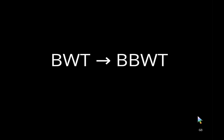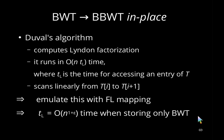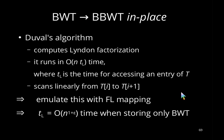For the second part—computing the BBWT from the BWT—we use Duval's algorithm, which computes the Lyndon factorization in O(N · TL) time, where TL is the time for accessing an entry of T. Since we do not have the text but the BWT, we emulate the text scan using the FL mapping, making TL become O(N^(1+ε)) time.